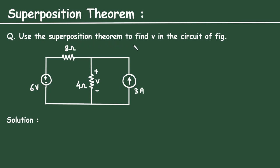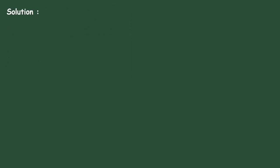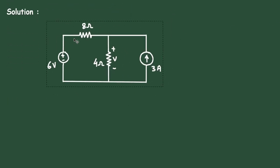Use the superposition theorem to find V in the circuit. Here we have to find the voltage V across the 4 ohm resistor using the superposition theorem. In this circuit there are two sources: one voltage source and one current source.